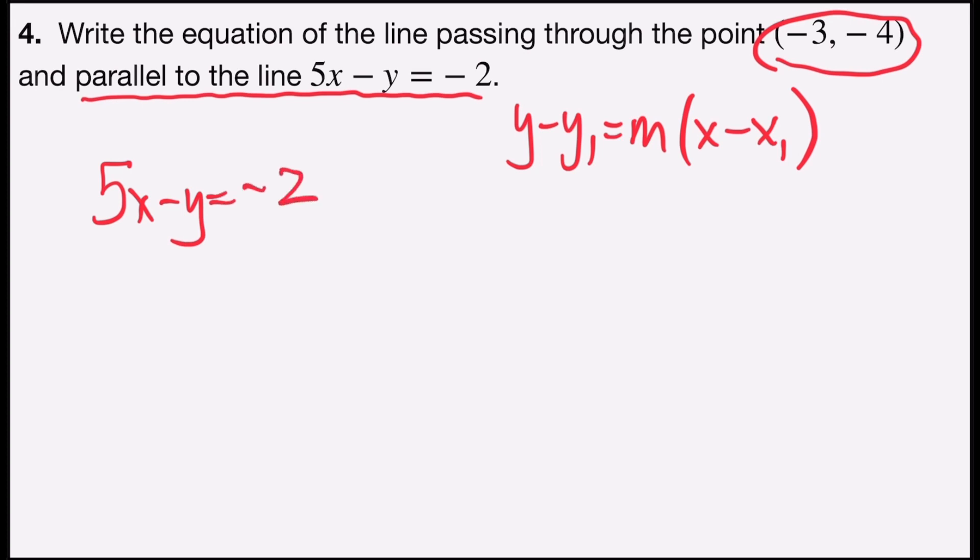We know that parallel lines have equal slope, and so I have to transform the equation by subtracting 5x from both sides. 5x - 5x is zero. Zero minus y is -y = -5x - 2.